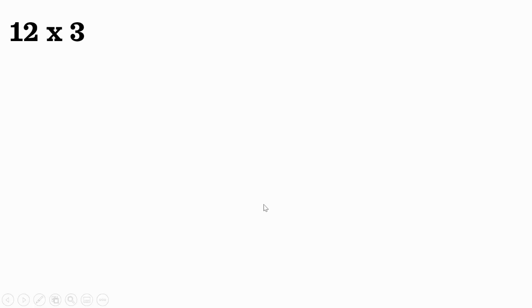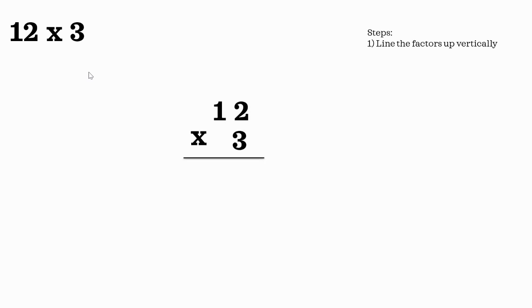Let's try a two-digit by one-digit multiplication sentence. Here we have 12 times 3. When we are multiplying, each number in a multiplication sentence is known as a factor. So 12 is one factor and 3 is the second factor. The first step is to line up the factors vertically, which means one on top of the other. Notice we put the 2 atop of the 3 because they're both in the ones place, so we make sure that we line up the ones place.